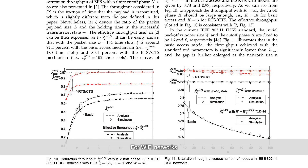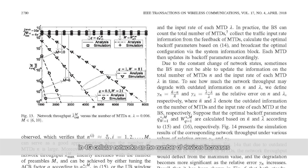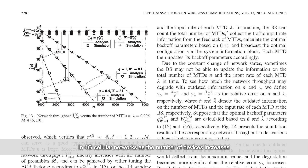For Wi-Fi networks, for example, the access efficiency with 100 devices can be improved by 60 percent over the current standard. And the gain is even more substantial in 4G cellular networks as the number of devices increases.